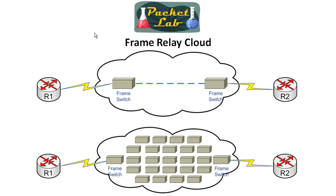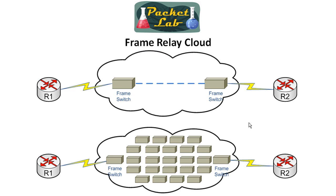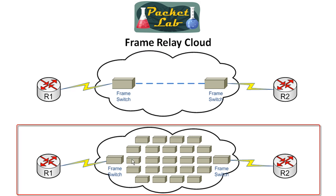When sending traffic from R1 to R2, the logical progression is that R1 connects to a frame relay switch, that switch connects to another frame relay switch, which then connects to R2. But what's actually happening on a physical level is that there's a frame relay cloud with many frame relay switches. The path through it might go from switch to switch in various ways — it doesn't matter. We don't care about how many switches there are or what path is taken; that's provisioned by the carrier.